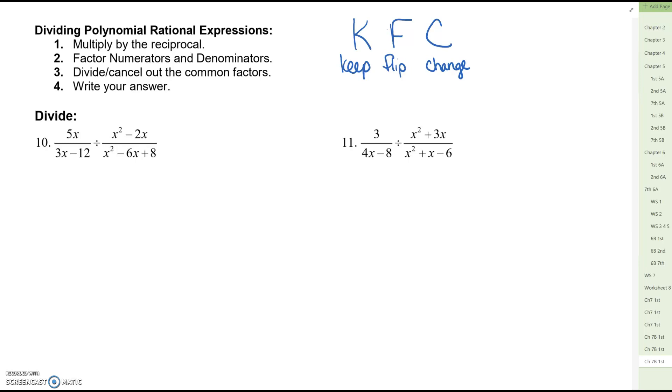So in number 10 we are going to keep the first fraction the same. We are going to flip the second fraction and then we're going to change the sign to multiply. Once we've done that we now have the exact same problems that we were doing yesterday. The last time that we had class we were multiplying rational expressions and the strategy for this is factor, factor, factor, and then cancel off any terms.